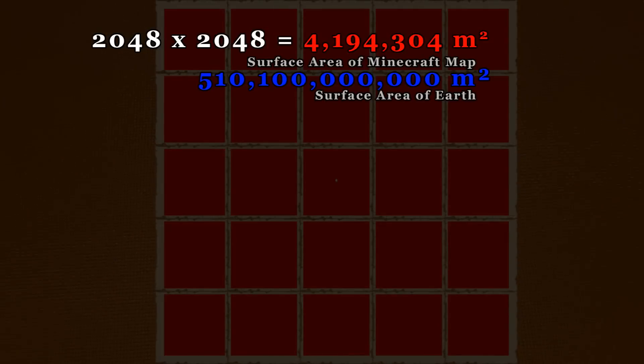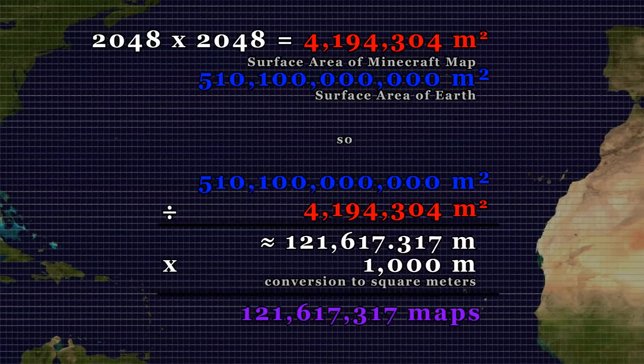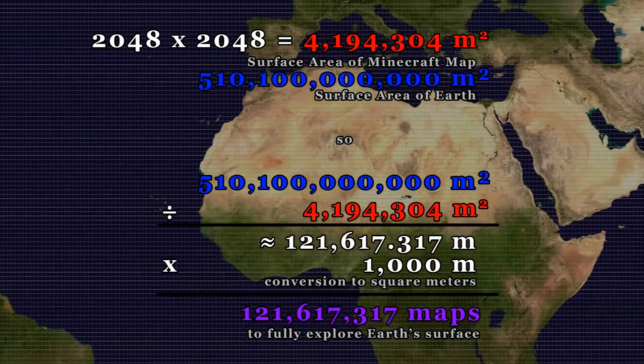Earth is often portrayed as minuscule compared to other heavenly bodies, but it would take over 120 million maps to fully display the Earth's surface. That is a very small star.